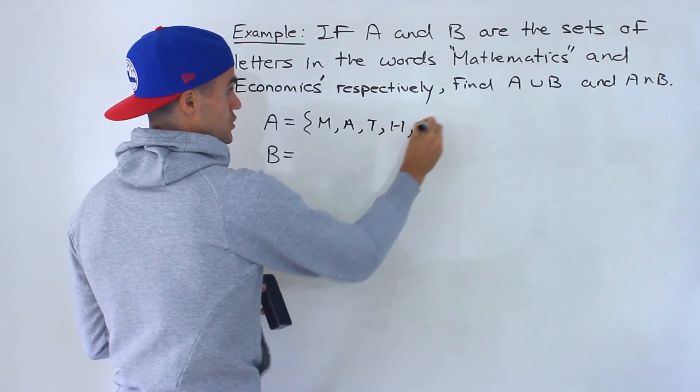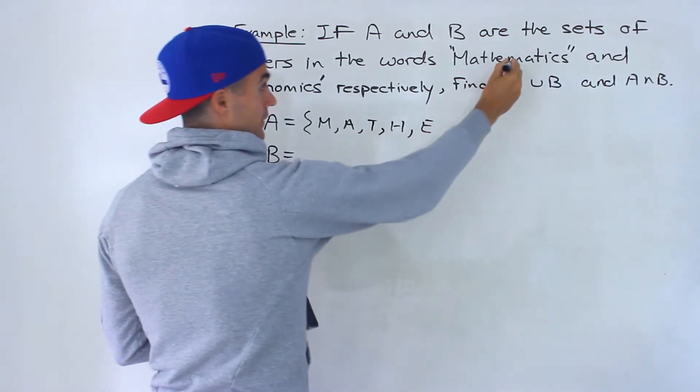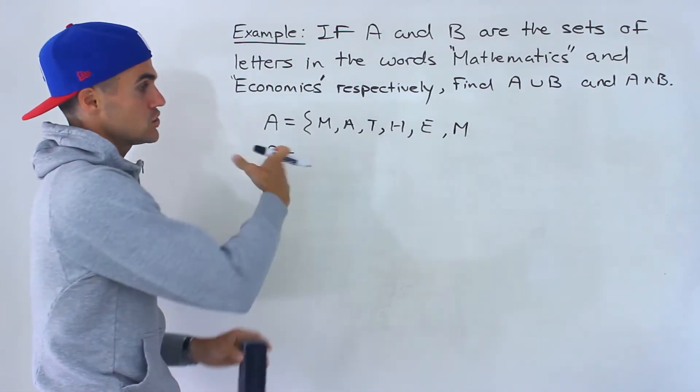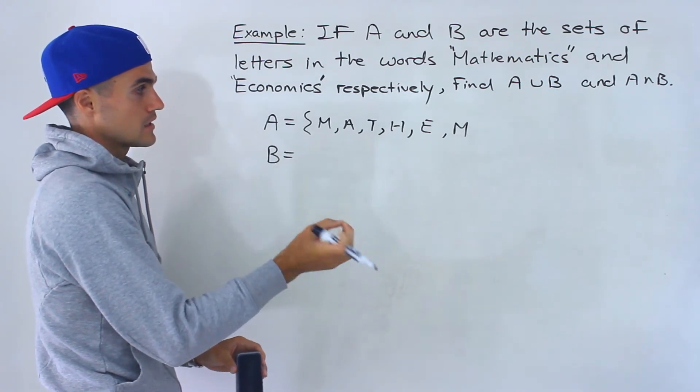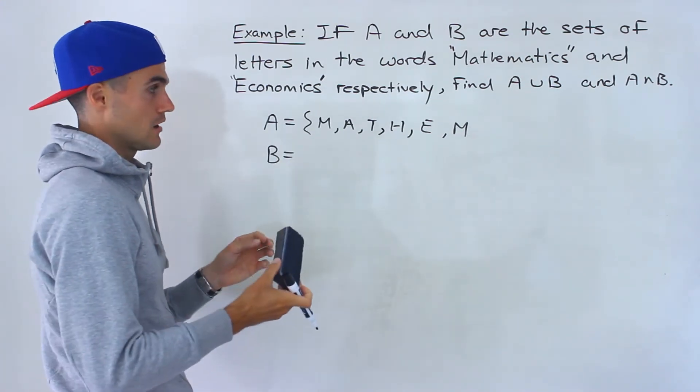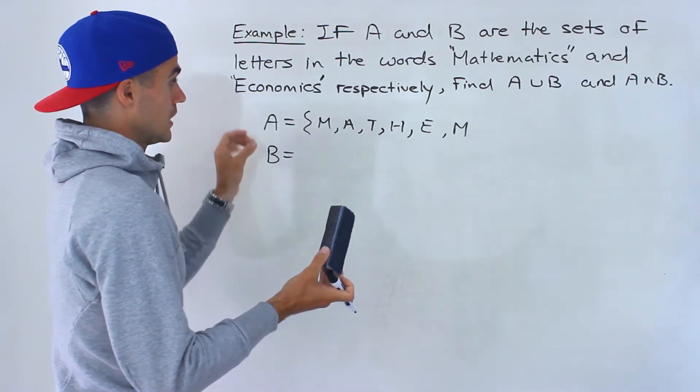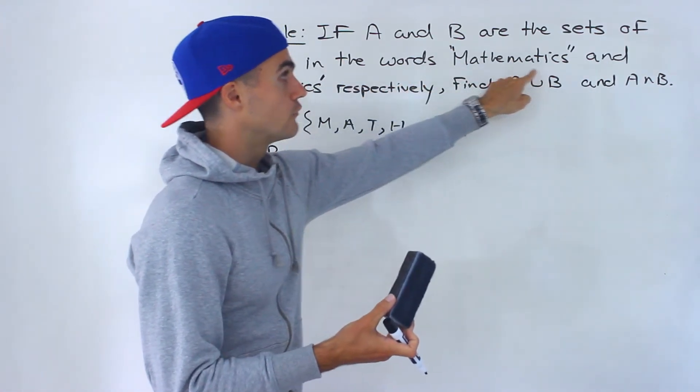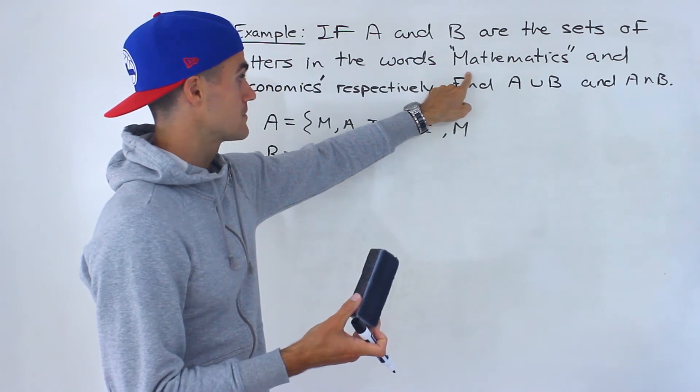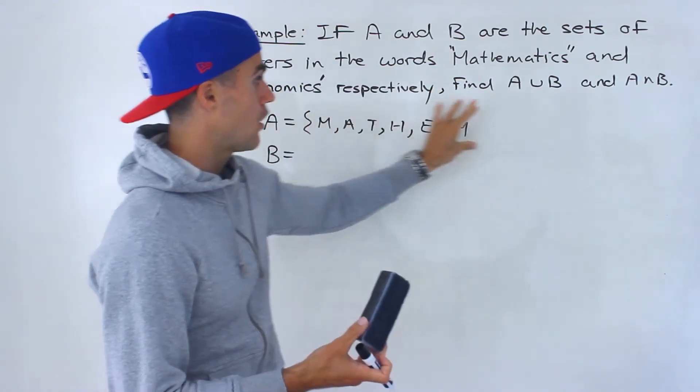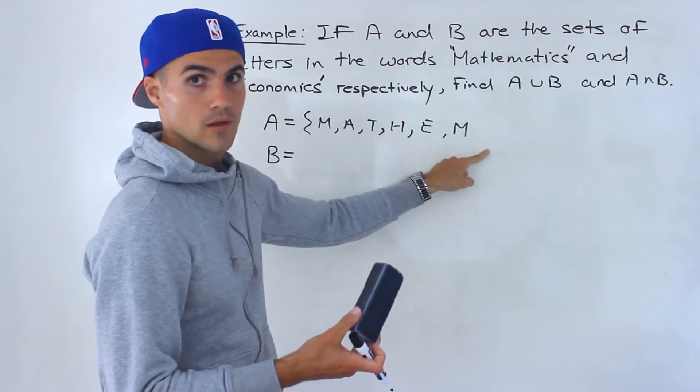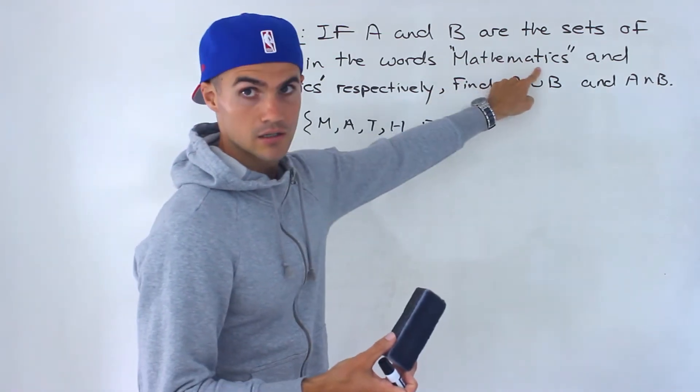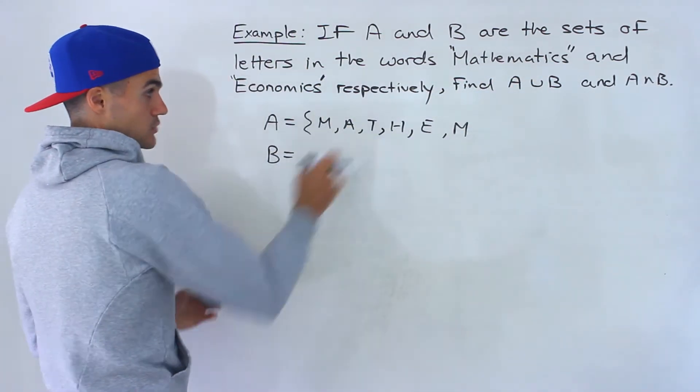Well you can actually for the first five because they're all different but then notice this M here you wouldn't write there because if you remember in sets each element can only appear once. This may be a trick choice on a multiple choice test for example. They might say A is the set of letters in the word mathematics and one of the choices may be all of the letters, the whole word written out, but that wouldn't be correct because you wouldn't write the M twice or the T twice for example.